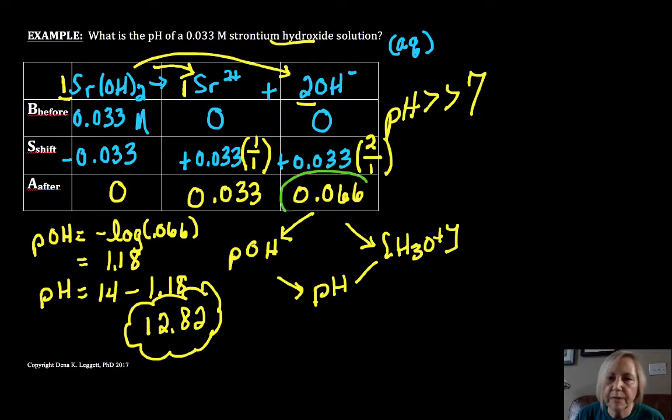Now make sure that your numbers are logical. I have a strong base, my pH should be much greater than 7 because I have a relatively concentrated solution of a strong base. So make sure you follow your logic there. Don't take minus the log of this number - this is really common - you see this number, they take minus the log of that number and call it the pH, but it's not the pH, it's the POH. And 1.18 is not a logical number for a strong base.